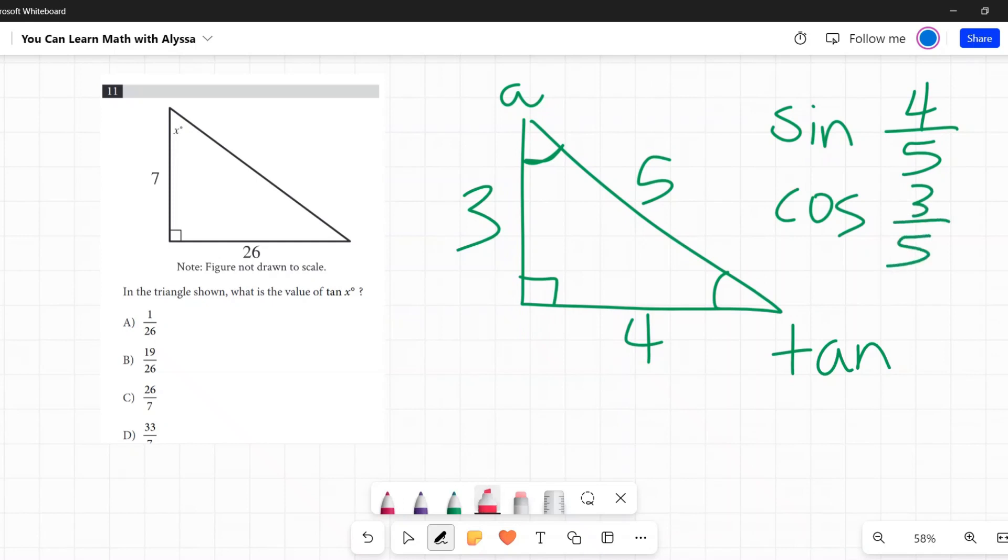And last but not least, tangent is the opposite side from that angle over the adjacent side, the short side touching the angle. So the opposite would be 4, and the adjacent would be 3. These are all very good things to learn for your PSAT practice.